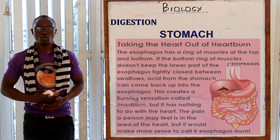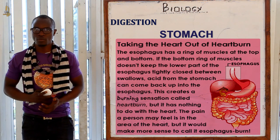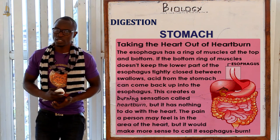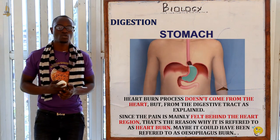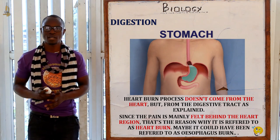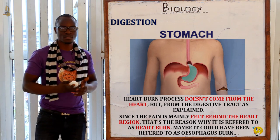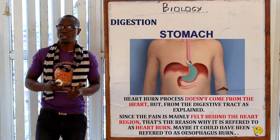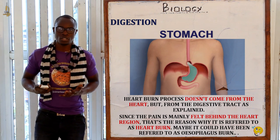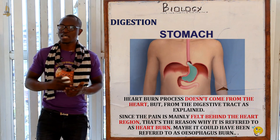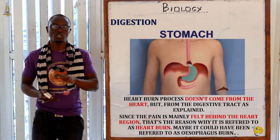Heartburn does not mean the heart is burning or failing. When the body fails to control swallowing and digestion, the cardiac sphincter fails to close properly, allowing hydrochloric acid to leak from the stomach into the oesophagus. This causes a burning sensation in the region near the heart, which is why the pain feels like it comes from the heart — but it actually originates from the oesophagus in the region near the heart.